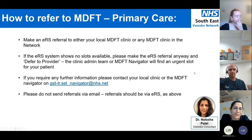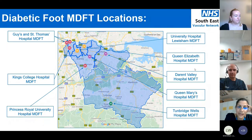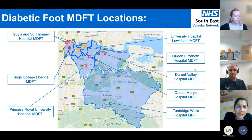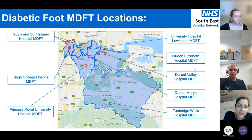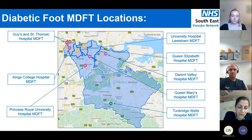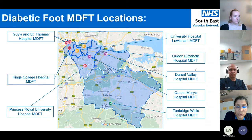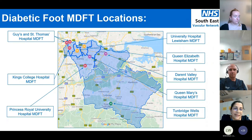Currently we have all our MDFTs set up so that we can treat patients as locally as possible. Our main sites are at Guy's and St Thomas's and at King's Hospital. We also have peripheral diabetes MDT sites at the PRU, Lewisham Hospital, Queen Elizabeth, Durrant Valley, Queen Mary in Sidcup, and a hospital in Tunbridge Wells — all with vascular surgeons associated with them.